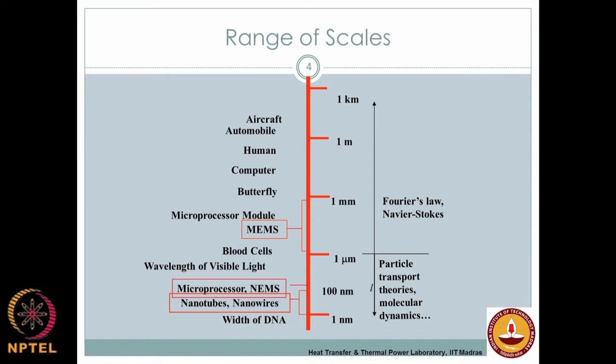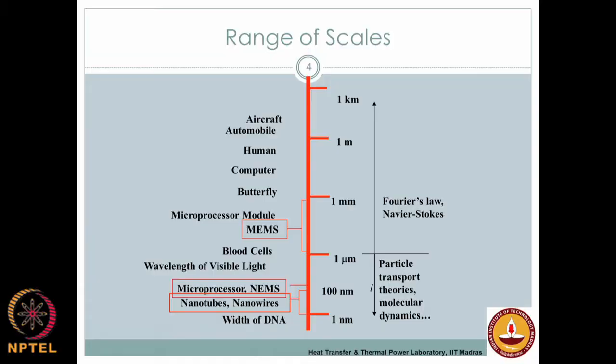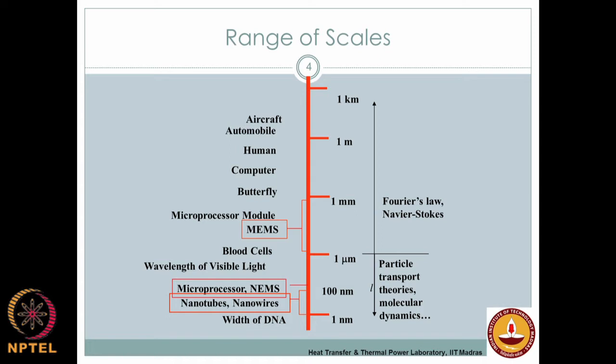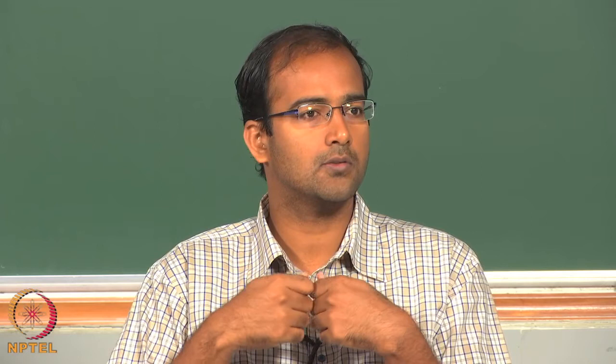Maybe 30–50 years back, we did not have applications in the submicron range; a millimeter-range device was considered really small and still operated in the continuum range. On the right-hand side of the length scale chart, the corresponding description of transport processes shows that for micron size and above, you can still use classical continuum mechanics — the Navier-Stokes equation for fluid flow and constitutive relationships linking heat flux with temperature gradient.